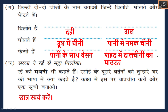Now write two things for each process. For bilavna you can use dahi or dal. For golna (dissolving): doodh mein chini — sugar in milk — and paani mein namak or chini — salt or sugar in water. For fainta (shuffling): paani ke saath besan, or cinnamon and honey — these you can stir or shuffle.